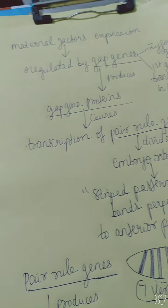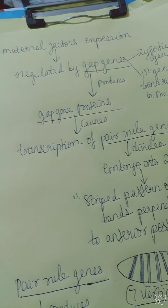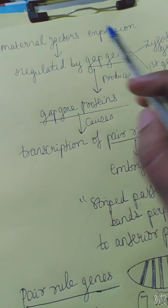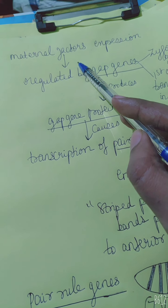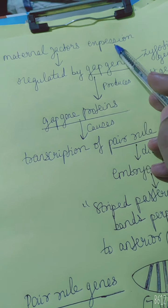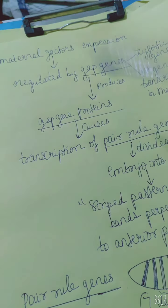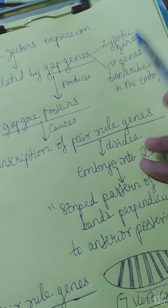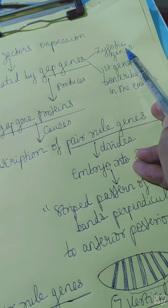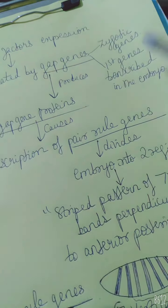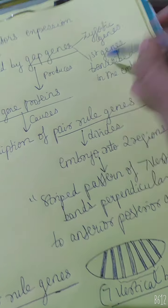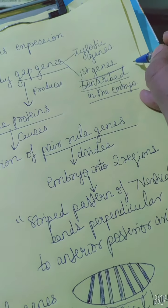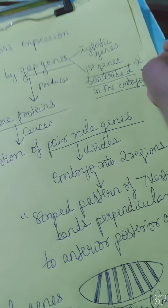This is a continuation of the origin of anterior-posterior patterning. Earlier I mentioned about maternal factors, maternal genes. These maternal factors are in turn regulated by certain genes known as GAP genes. GAP genes are nothing but zygotic genes — genes present in the zygote. These are the first genes transcribed in the embryo; when the embryo is formed, the first genes transcribed are GAP genes.